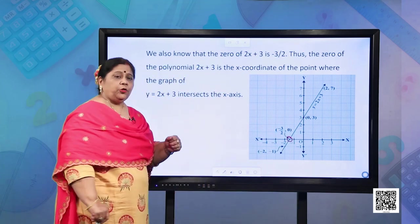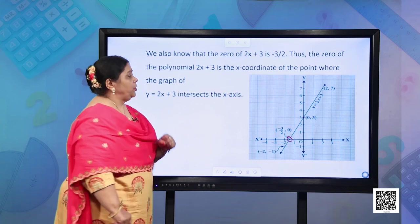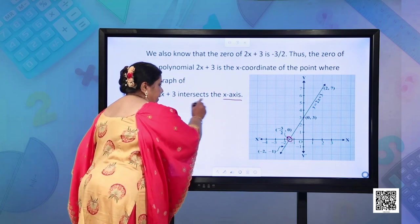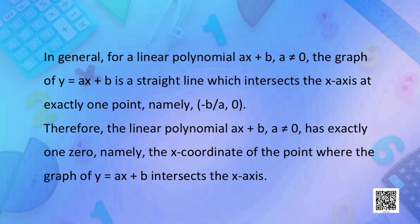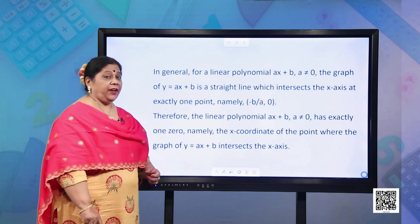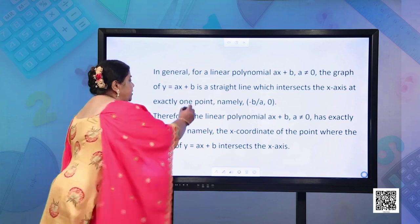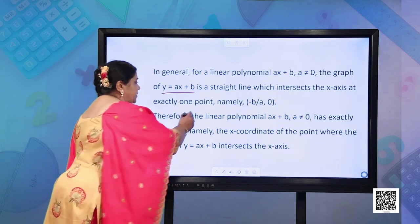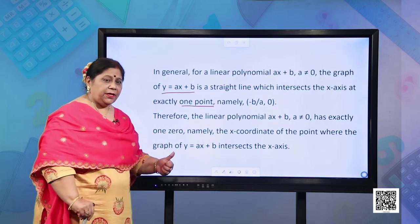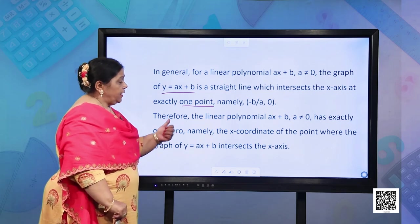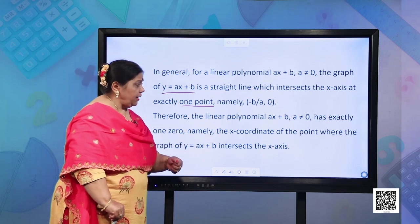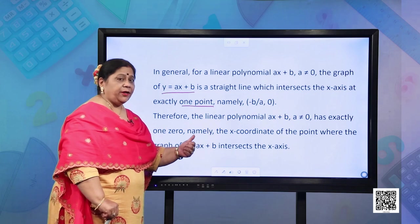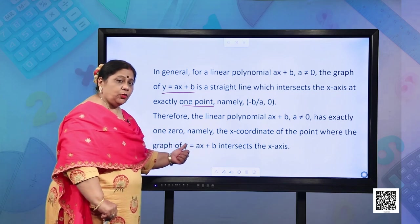Thus, the zero of the polynomial 2x + 3 is the x-coordinate of the point where the graph y = 2x + 3 intersects the x-axis. In general, for a linear polynomial ax + b where a ≠ 0, the graph of y = ax + b is a straight line which intersects the x-axis at exactly one point, namely (−b/a, 0). Therefore, the linear polynomial ax + b where a ≠ 0 has exactly one zero, namely the x-coordinate of the point where the graph of y = ax + b intersects the x-axis.